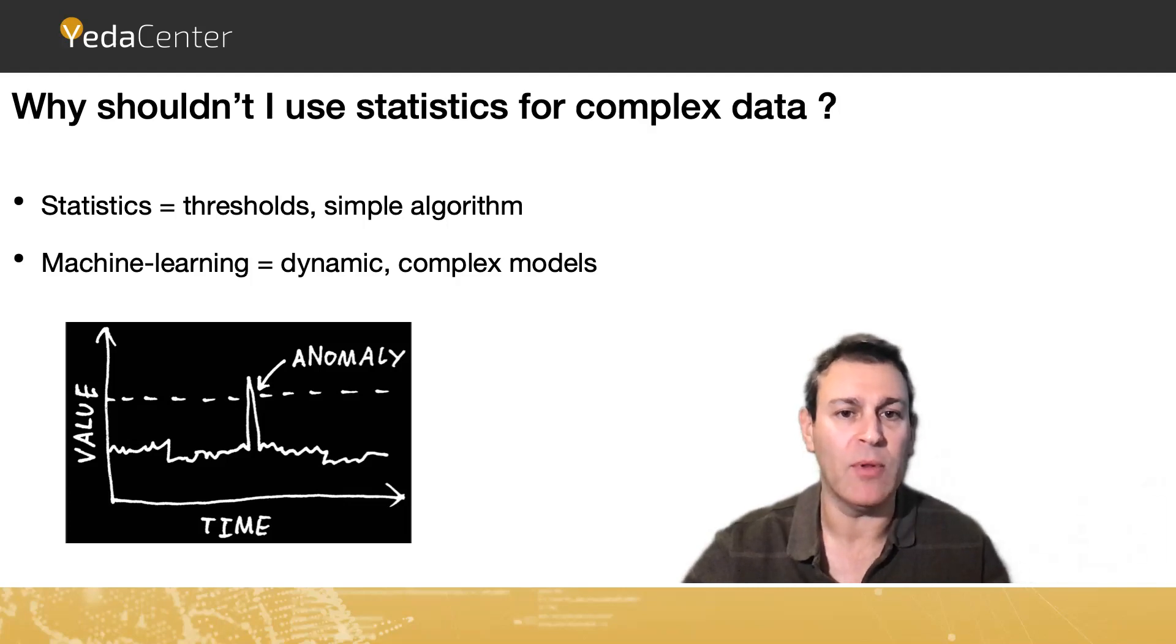So this is why we want to take more context into the data, and not sample just one or two variables. We want to take into account many things, a lot of context into our model. And this is why we use machine learning. Because it learns, and it's dynamic over time, and it's able to learn the changes and all the features together.